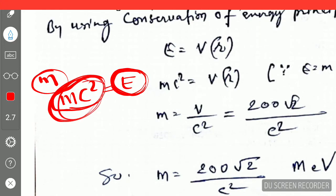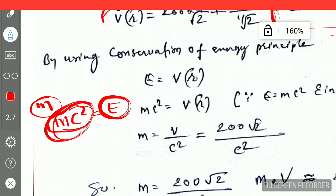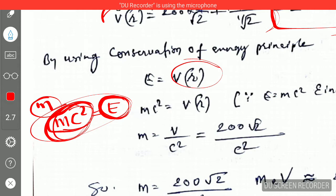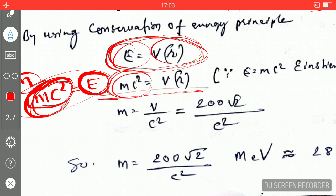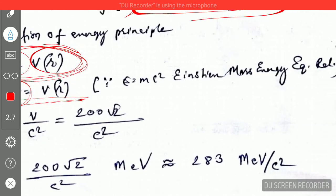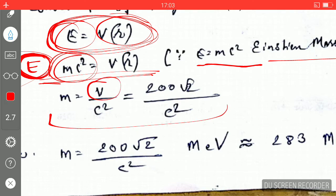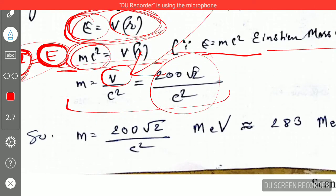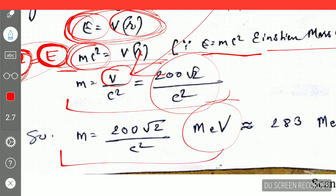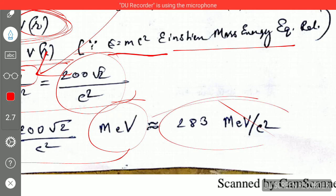The meson has this potential energy, so by conservation of energy, the potential energy and the mass-energy should be equal. I equate both energies: mc² = V(r) = 200√2 MeV. Plugging in the values with proper units and solving, I obtain the mass of the meson. That is your final answer. Thanks for watching this video.